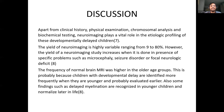The frequency of normal MRI brain was higher in the older age group, probably because children with developmental delay are identified more frequently when younger and evaluated earlier. Also, some findings such as delayed myelination are recognized in younger children and normalize later in life.